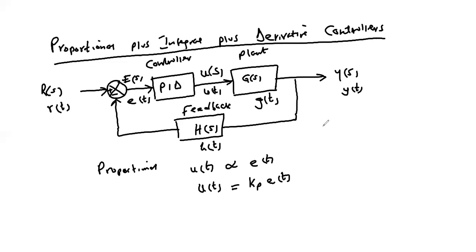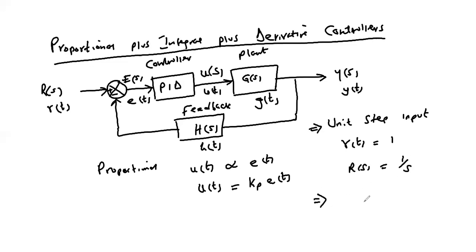For purposes of uniformity and ease of testing the performance of different controllers, we adopt a unit step input: r(t) = 1, which means R(s) = 1/s. We also adopt unity feedback, meaning H(s) = 1. We will test all controllers subject to unit step input on a unity feedback system.